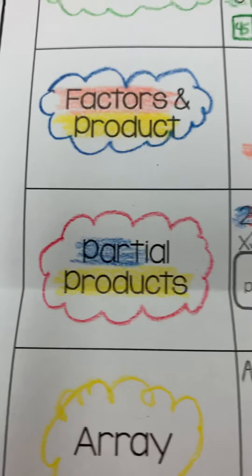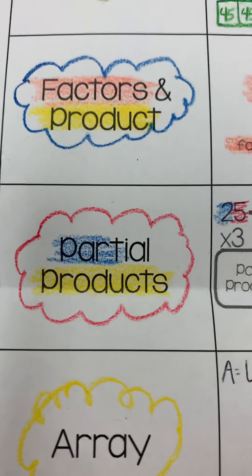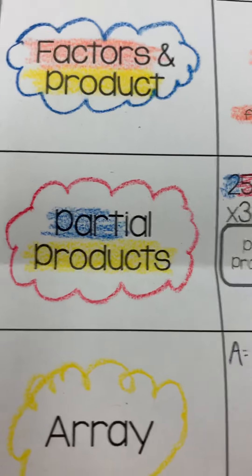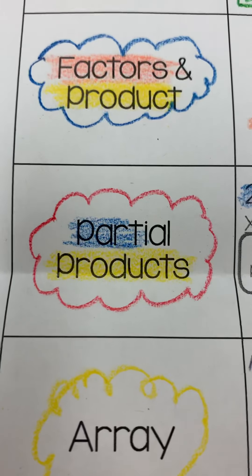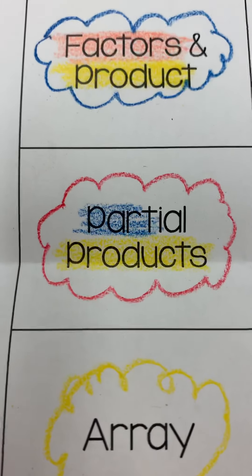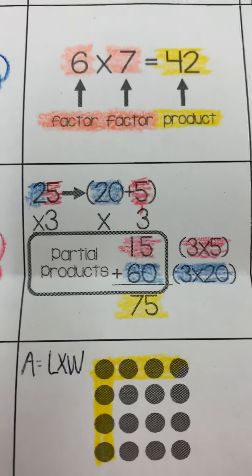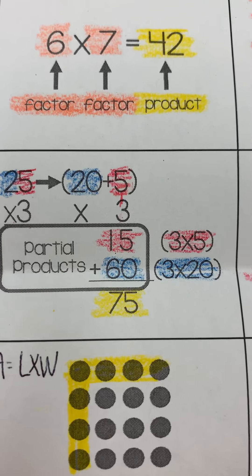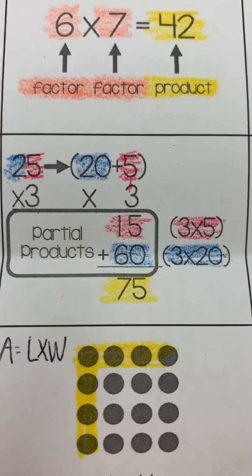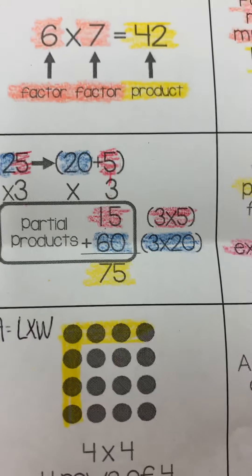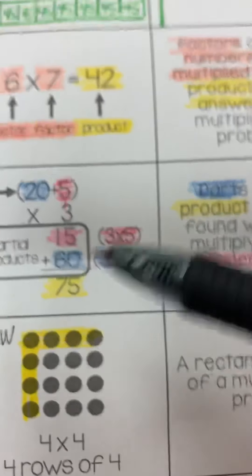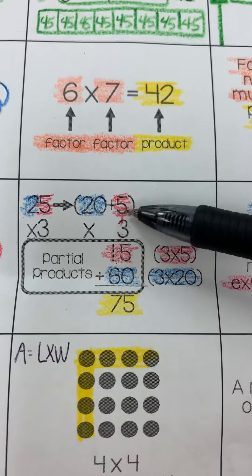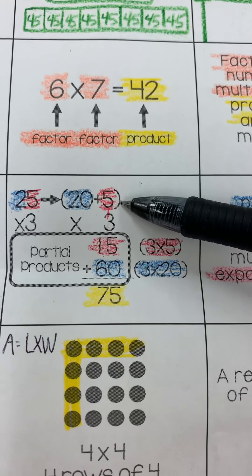The next one is partial products. Partial - the root word in partial is part. Product is, of course, the answer. So you get a partial product by breaking a number down into expanded form. As you see, they've done 25 times 3 here. They've broken down 25 into 20 plus 5, and they put it in parentheses.